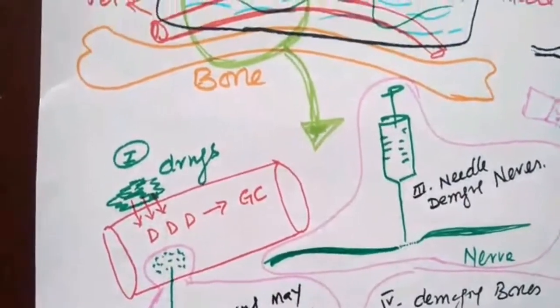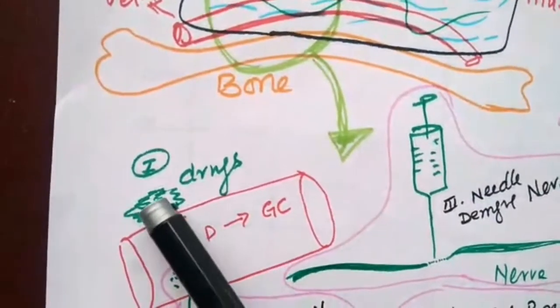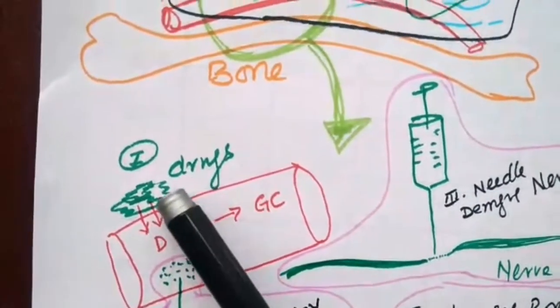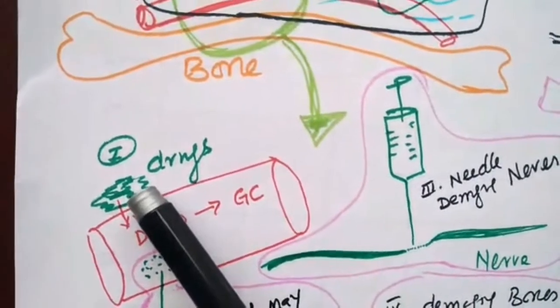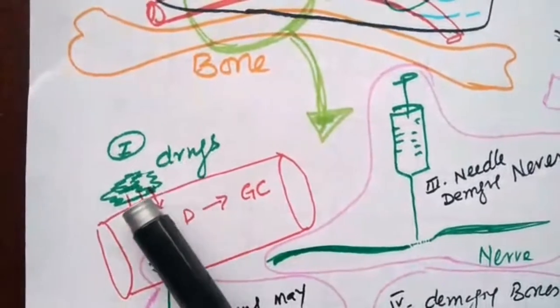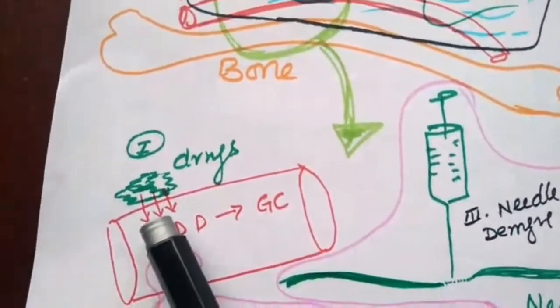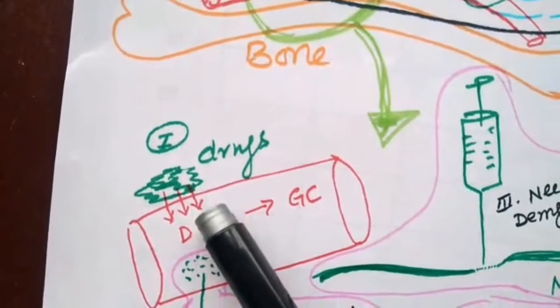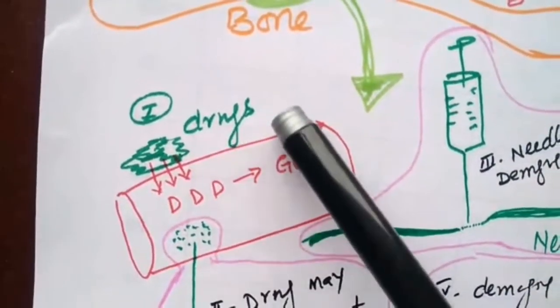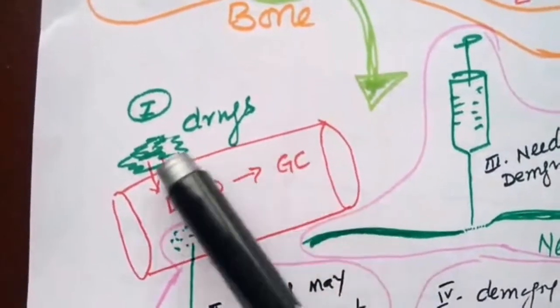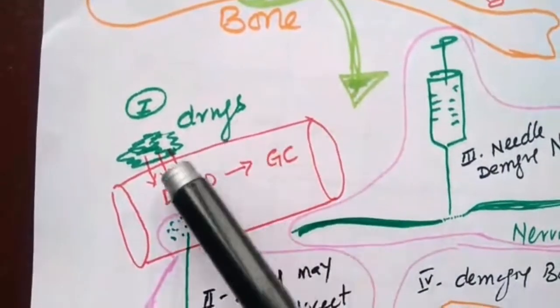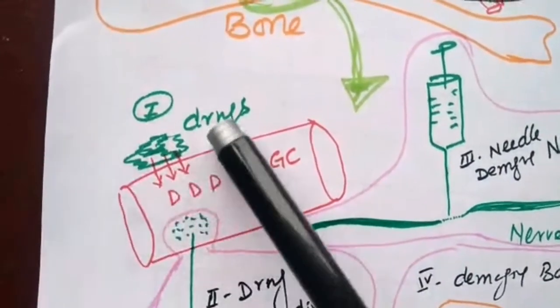We can inject this drug into two types of muscle: one is deltoid muscle and one is gluteal muscle. Deltoid muscle is the arm muscle. Gluteal muscle is the buttock muscle. We use both these muscles because they have greater blood flow. Greater the blood flow, greater will be the absorption. We can inject anywhere if these two muscles are not available.